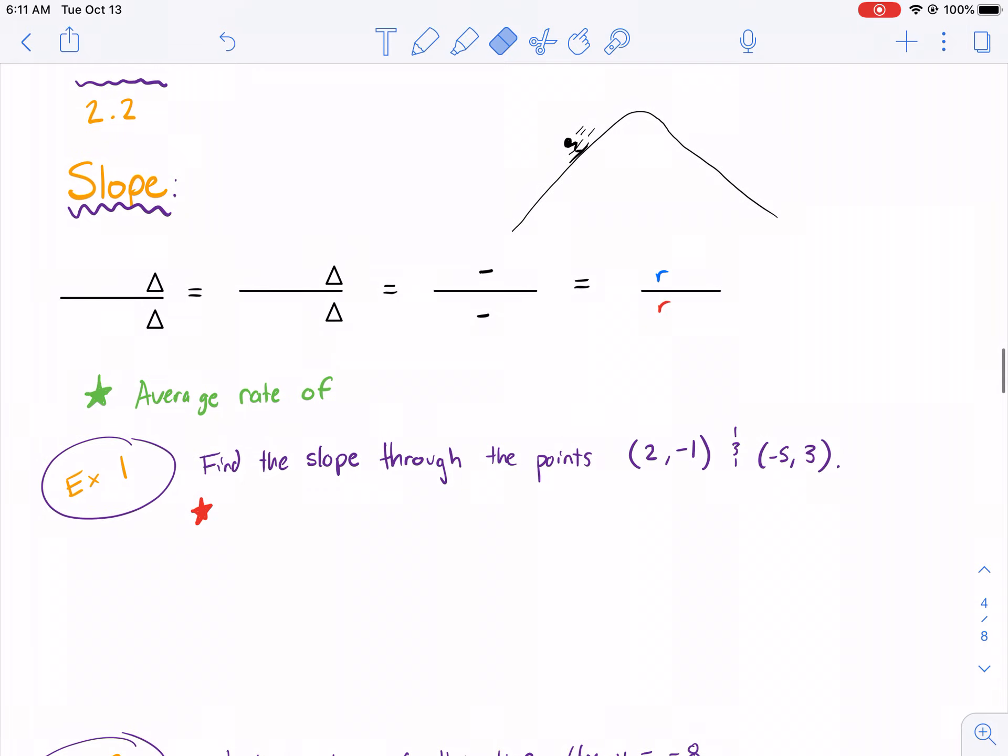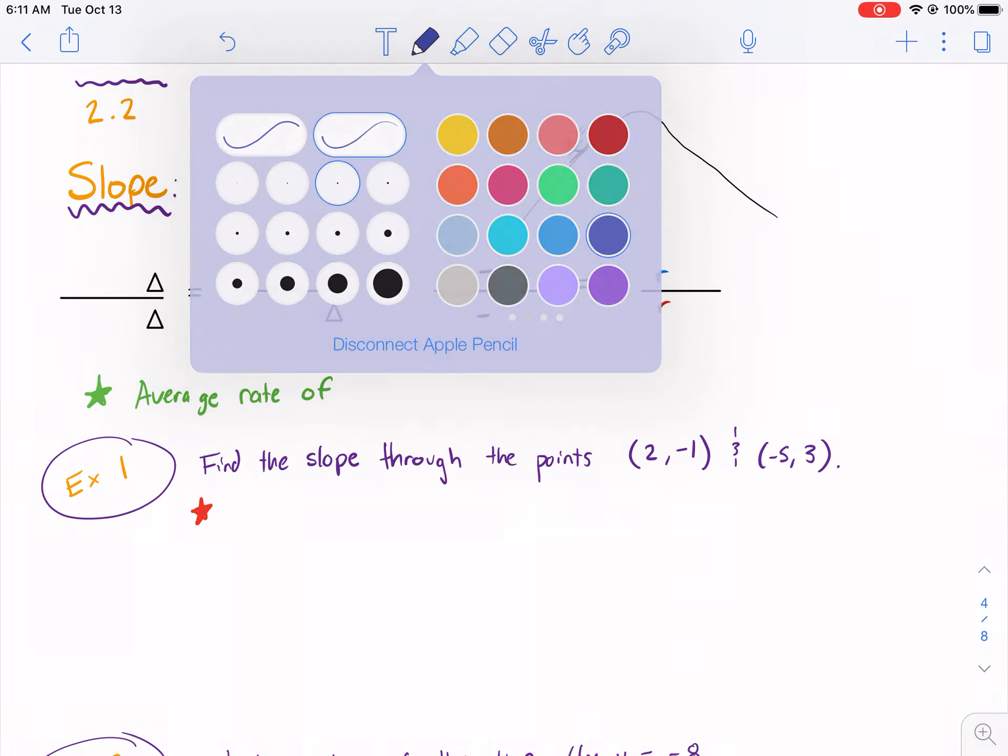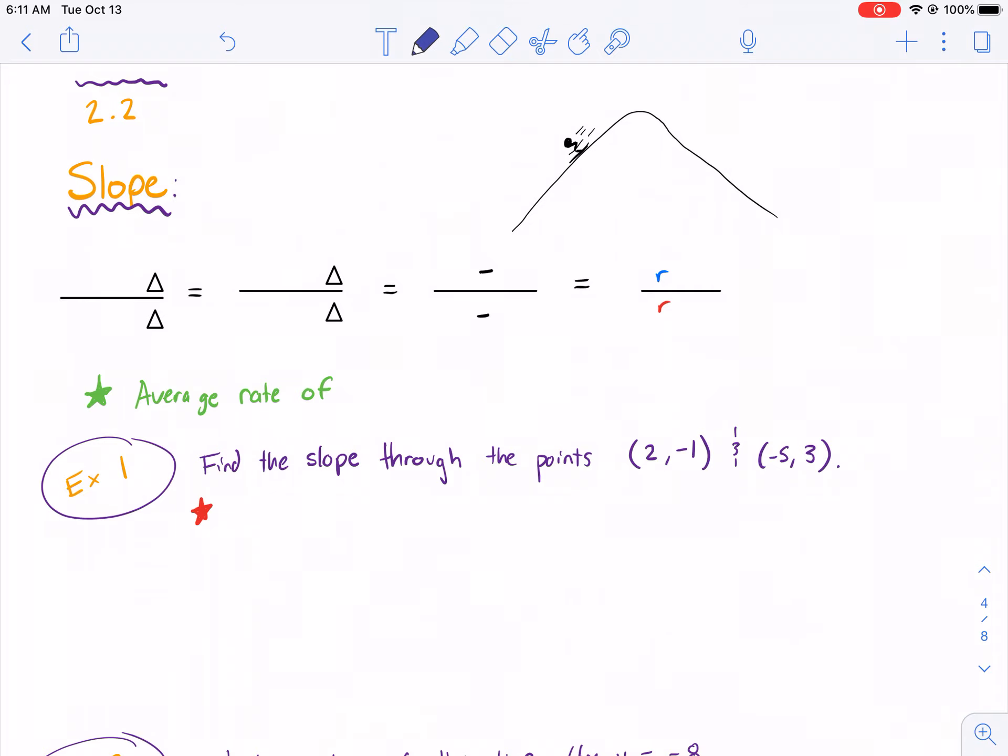Now when we're talking about slope, oftentimes we think of skiing. So skiing, people often say, let's hit the slopes. What does that mean? It's talking about how steep something is. So it's kind of implied that when you say hit the slopes, it's something that's steep. So how steep something is.